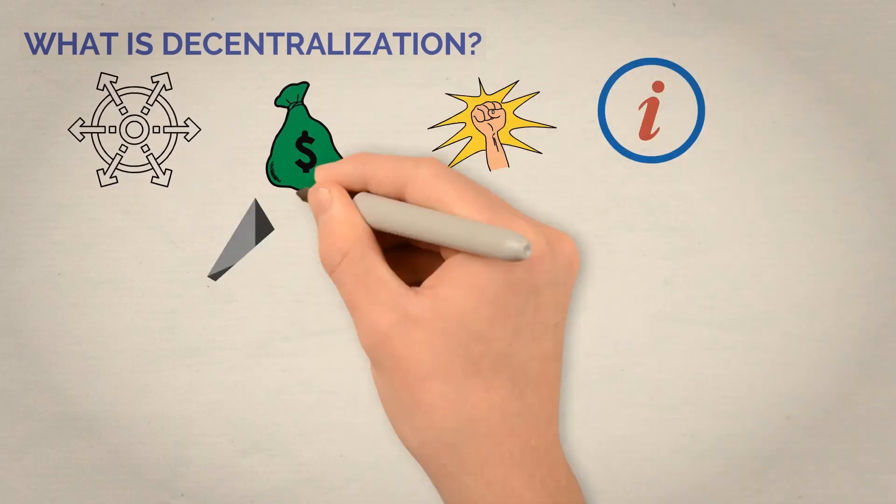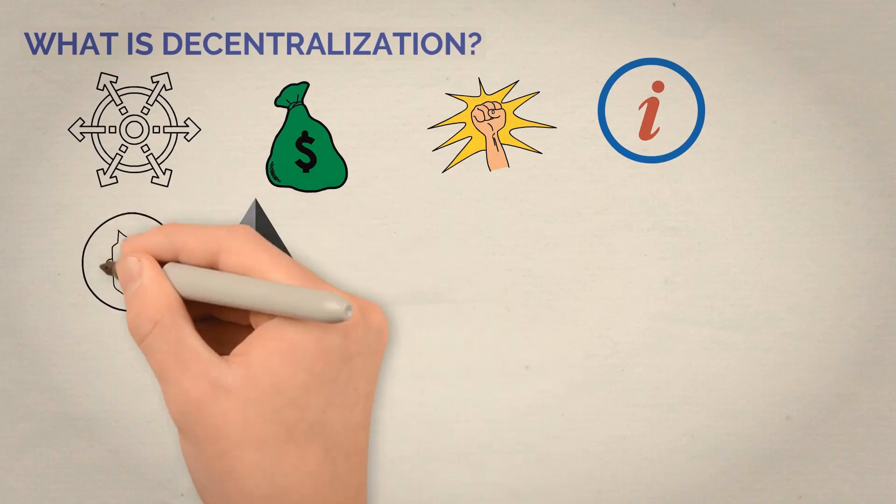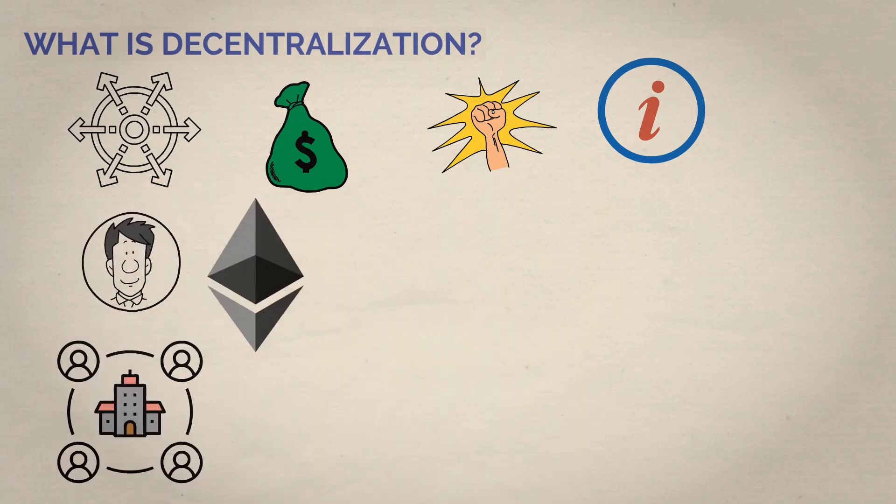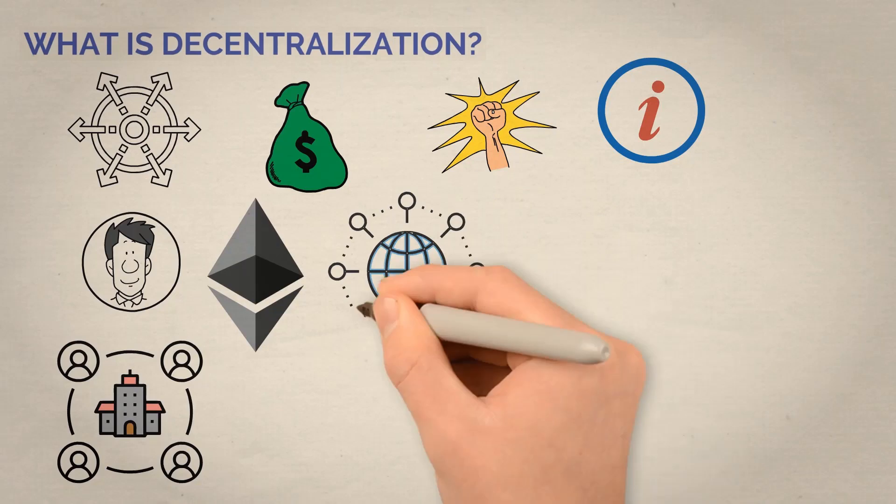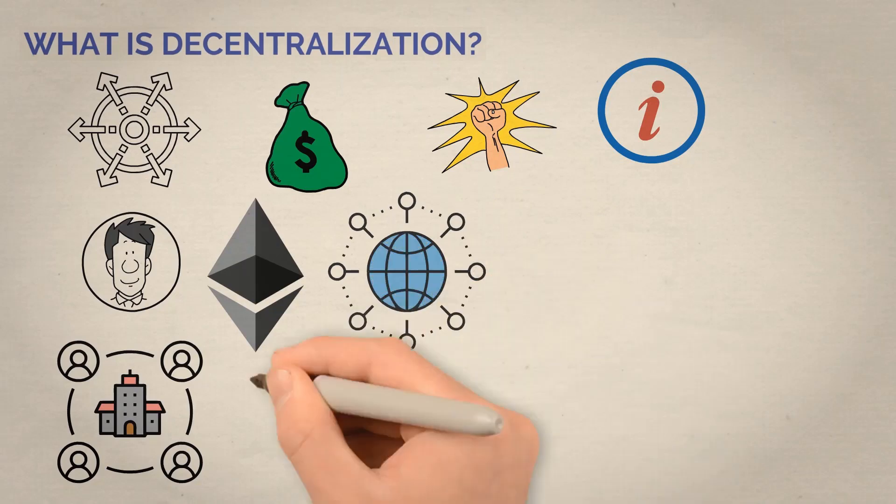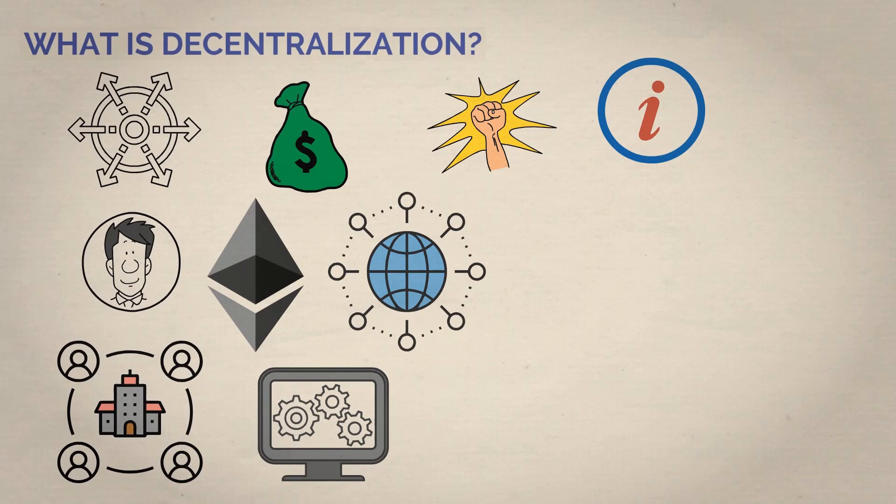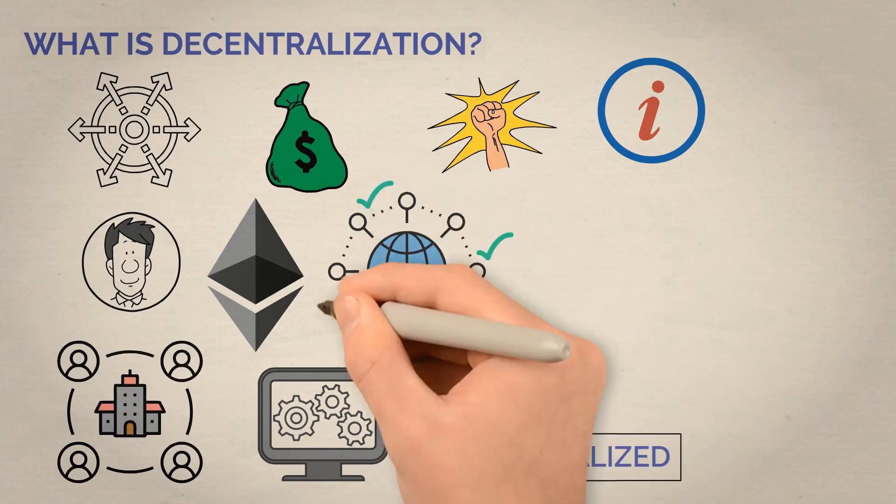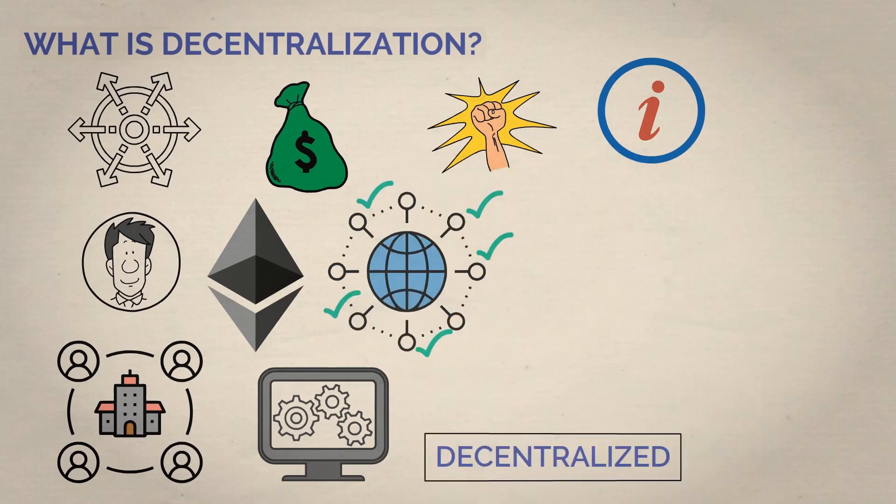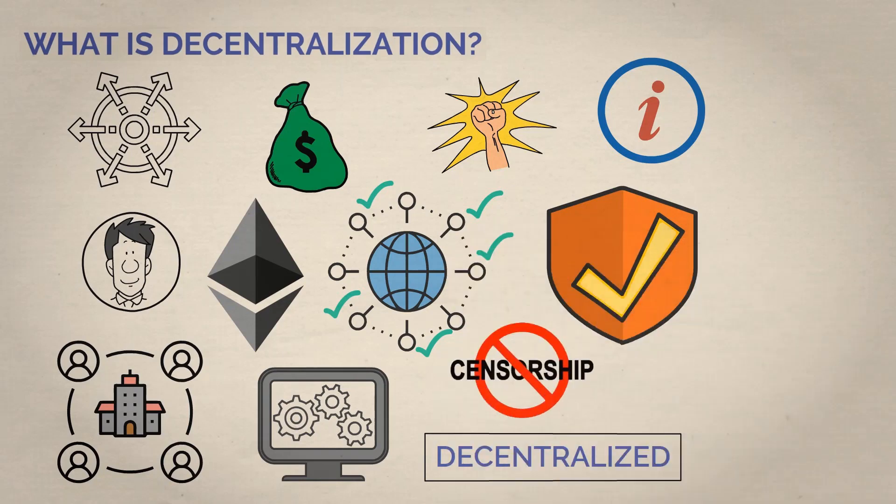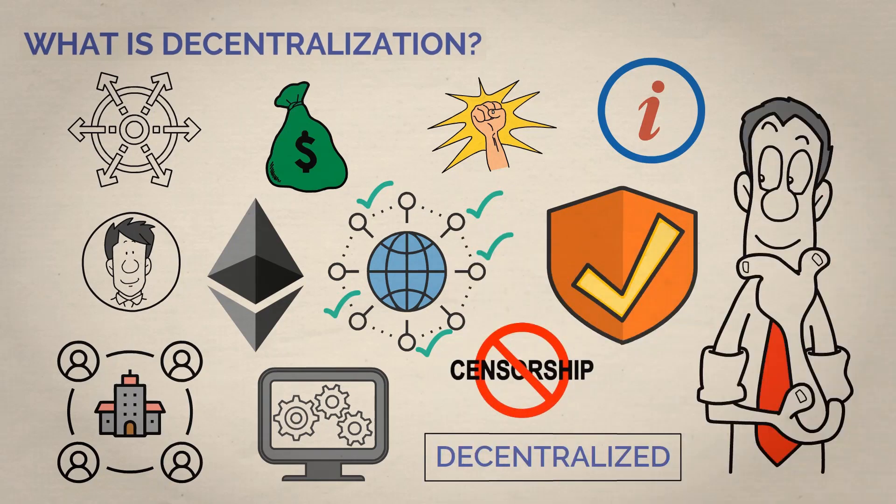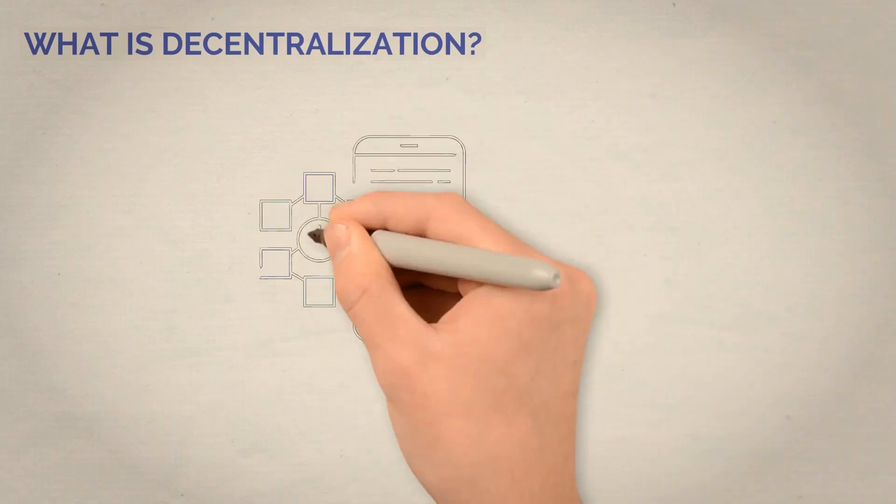Ethereum is a platform that isn't controlled by any one person or organization. Instead, it's run by a network of computers all over the world. These computers all have copies of the same software and work together to ensure everything runs smoothly. This is called being decentralized. No one can shut it down or change it without the agreement of most computers on the network. This makes Ethereum really secure and resistant to censorship. Cool, right?